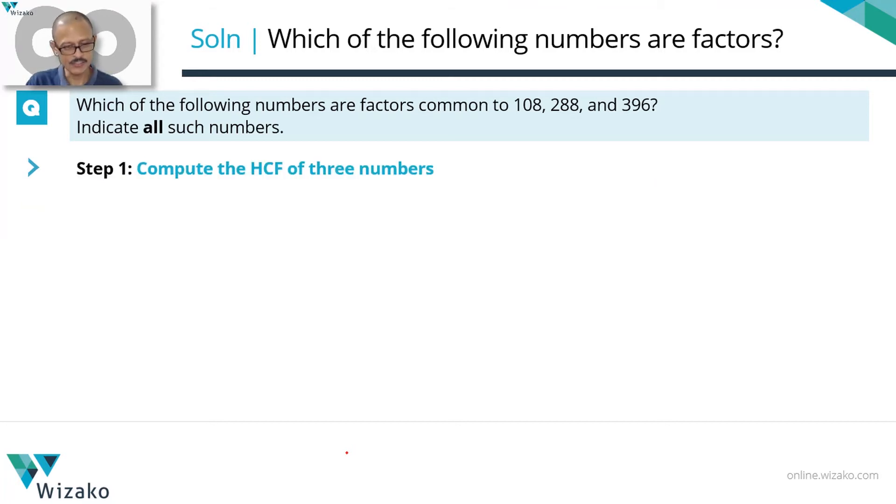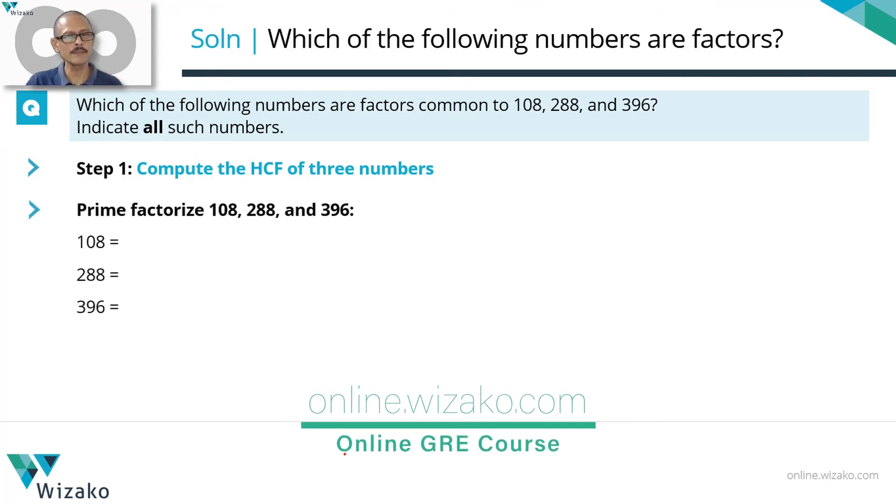Start with step 1. Let's find out the HCF of these three numbers. Finding the HCF entails two steps. Step A, prime factorize these three numbers. Prime factorizing 108. 108 is 4 times 27. 4 is not prime, so that's 2 squared. 27 is not prime, that's 3 cubed. So 2 squared times 3 cubed is what we have.